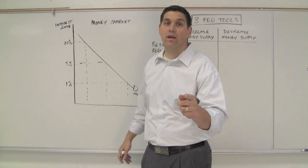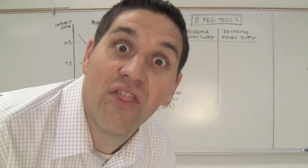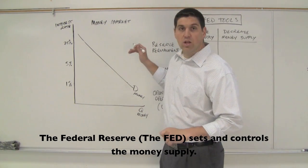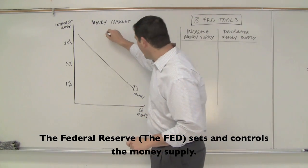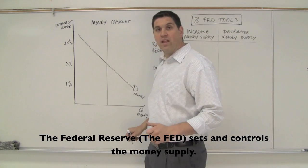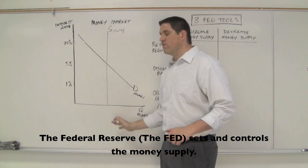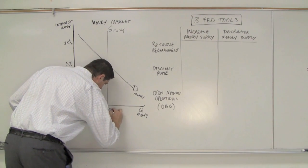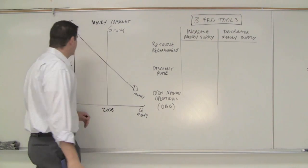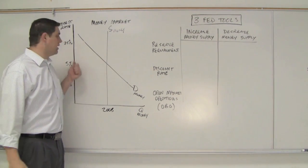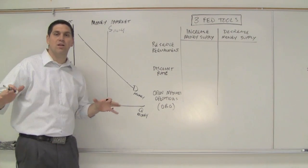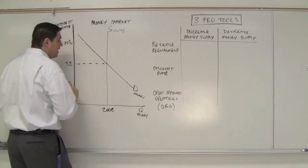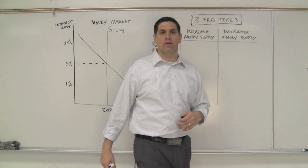What about the supply? Who supplies? The Fed — the government supplies money. The supply curve is a vertical, perfectly inelastic line. It's vertical because the quantity of money out there — let's say $200 billion — is completely unrelated to the interest rate. It's set; that's how much we have. This comes together to give you the equilibrium interest rate.